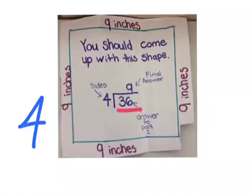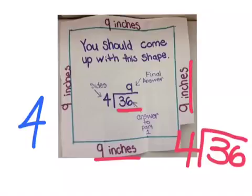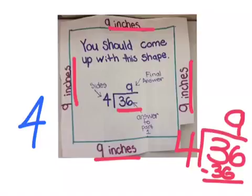Now we need to do 36 divided by 4, since there are 1, 2, 3, 4 sides on a square. We get 9 because 9 times 4 is 36. That means 9 is our final answer.